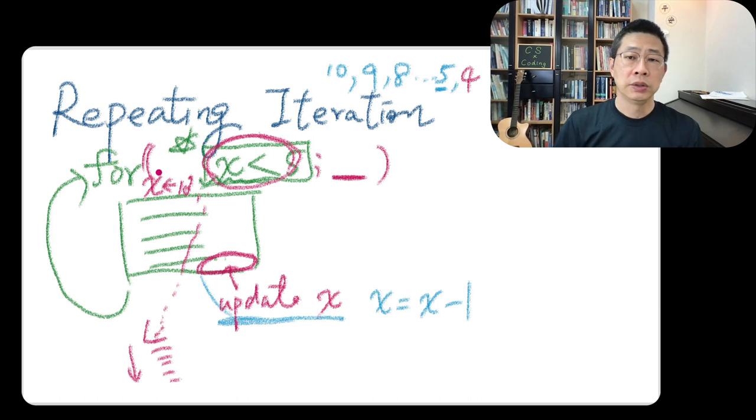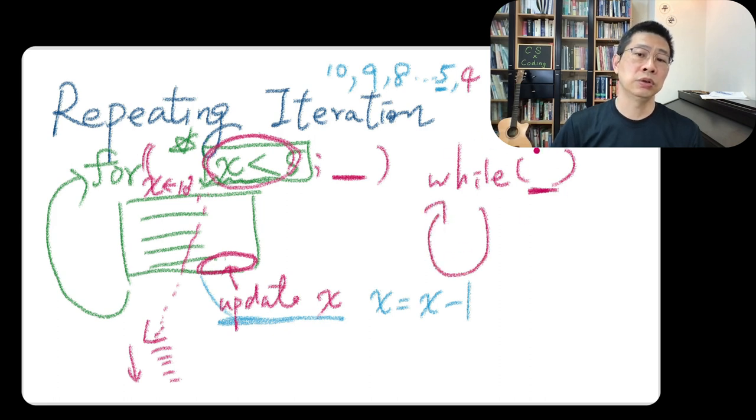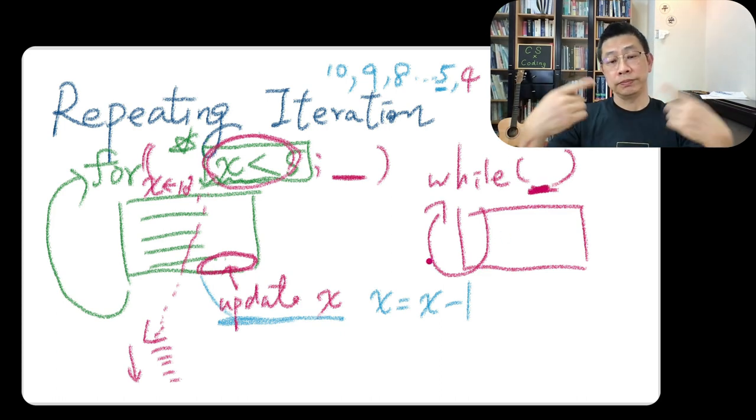This is one type of loop. And another type of loop we call the while loop. We just have the same idea. While this boolean condition is true, and we will repeat until it's false. Of course, you need to make sure the update part will kind of alter the state of the boolean here. Otherwise, you will be forever while looping.